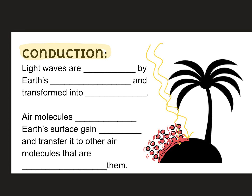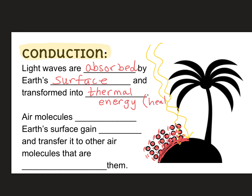Let's go back and fill in the blanks. Light waves are absorbed by Earth's surface and are transformed into thermal energy, which is another word for heat. Air molecules touching Earth's surface gain energy and transfer it to the other molecules that are touching them. This is how conduction heats the air in Earth's atmosphere at the surface.